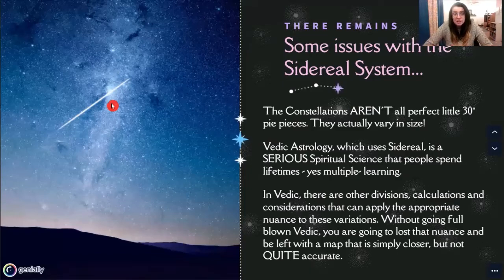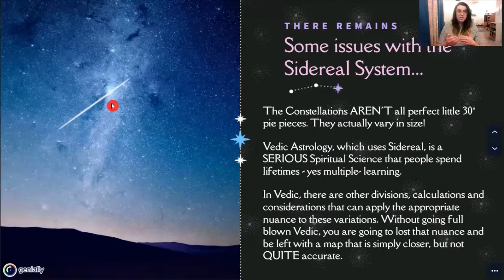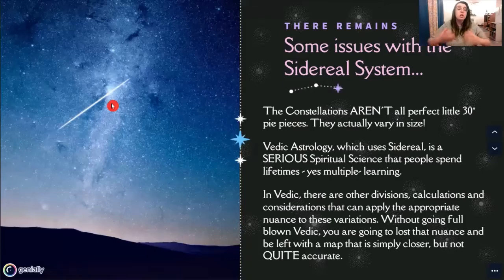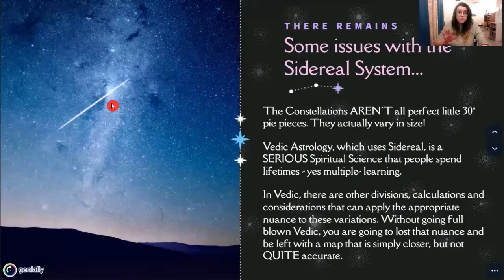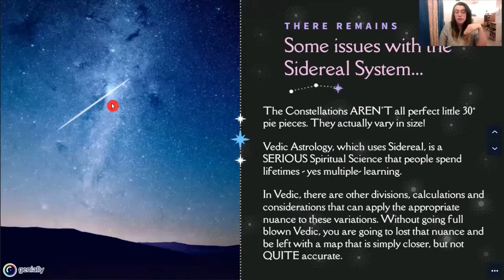However, Vedic is an entirely different system — the charts look totally different. So without going full-blown Vedic, you're going to lose all of these additional considerations that apply more nuance. Really, what you're going to have is a map that is much closer — pretty close — to the actual stars, but not quite, because of these differences in constellation size.